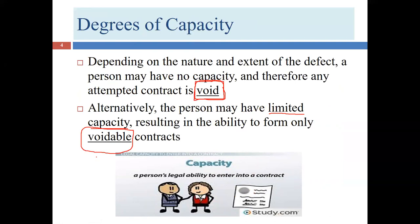In many voidable contracts, one party has limited capacity and the other does not. Generally, only the person with limited capacity can exit. A voidable contract is 'able to be voided' but doesn't automatically get voided — that person might decide the contract is good for them and keep it, or they might choose to void it, at which point it's as if it never happened.